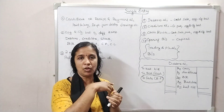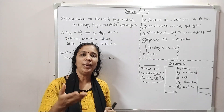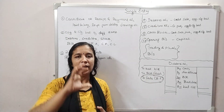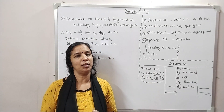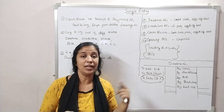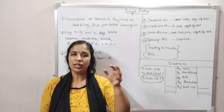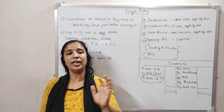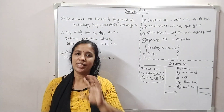Next, there are three adjustments: depreciation, provision for doubtful debts. If you have a single entry system, you will question these three categories. If you have a cash transaction and an opening and closing balance of certain items, you will have three adjustments.